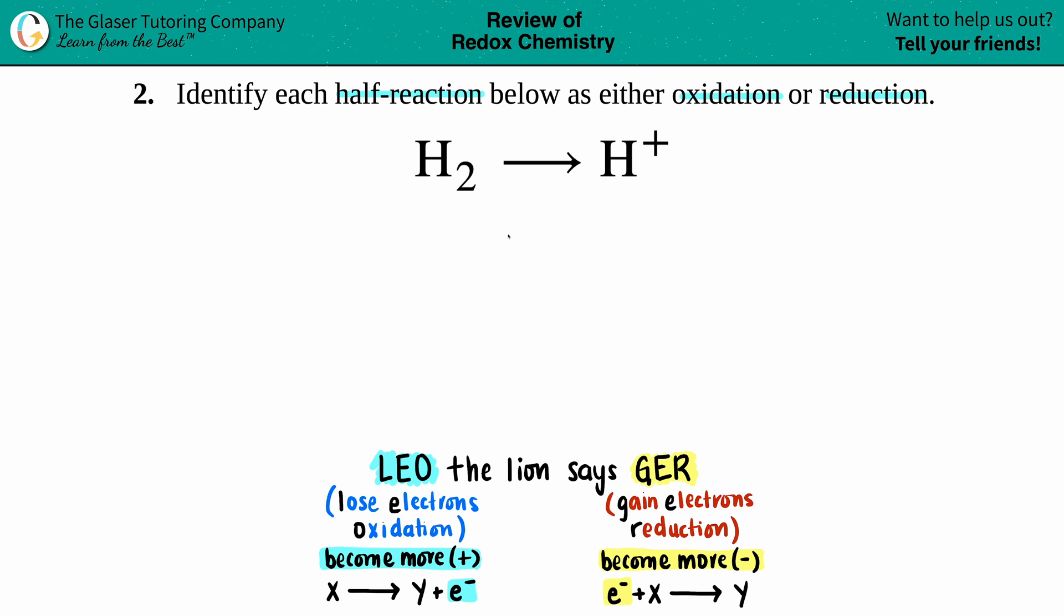The first thing is to make sure that your equation is balanced. You have two H's here, you only have one H here, so I'm just going to put a 2 in front of the H⁺.